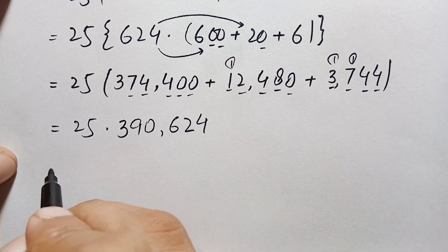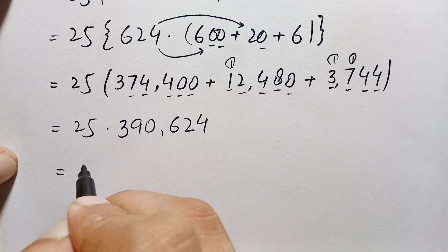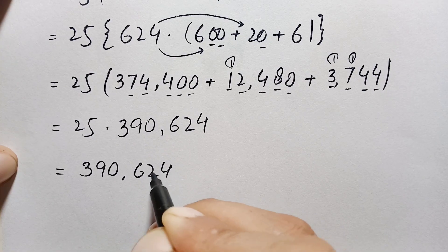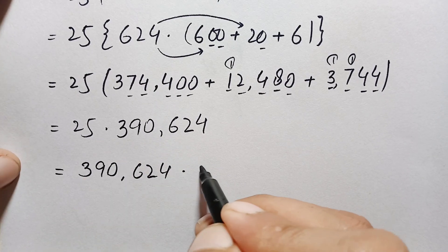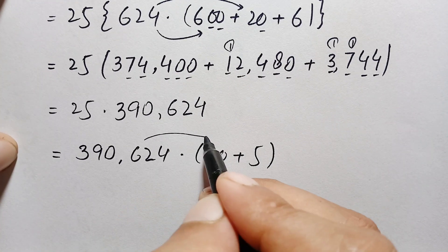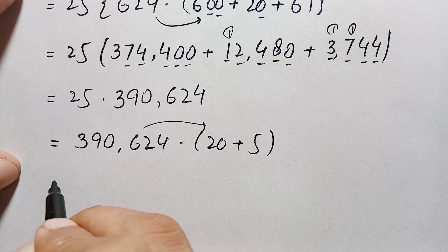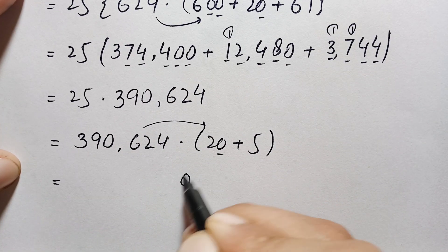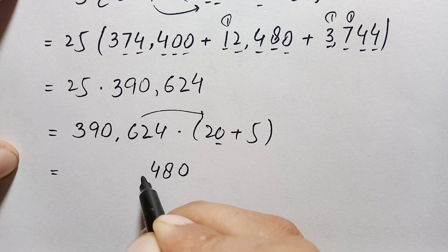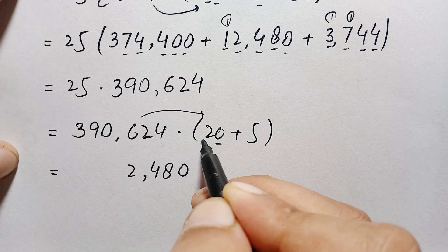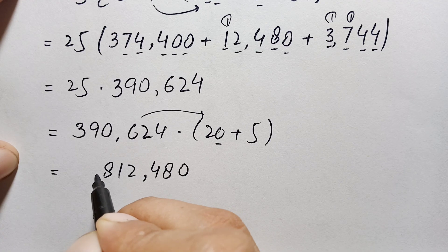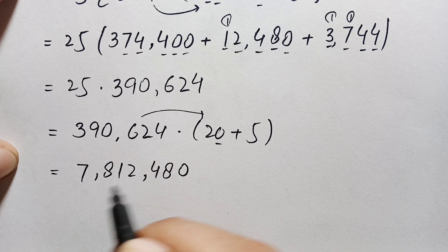Finally, we multiply 390,624 by 25. We split 25 into 20 plus 5. First, multiply 390,624 by 20: times 0 is 0; 2 times 4 is 8; 2 times 2 is 4; 2 times 6 is 12 — carry 1; 2 times 0 is 0, plus 1 is 1; 2 times 9 is 18 — carry 1; 2 times 3 is 6, plus 1 is 7. So 390,624 times 20 gives 7,812,480.